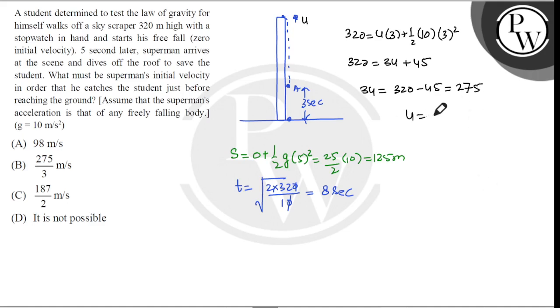So u equals 275 by 3 meter per second, which is option B. I hope you understood the solution, thank you.